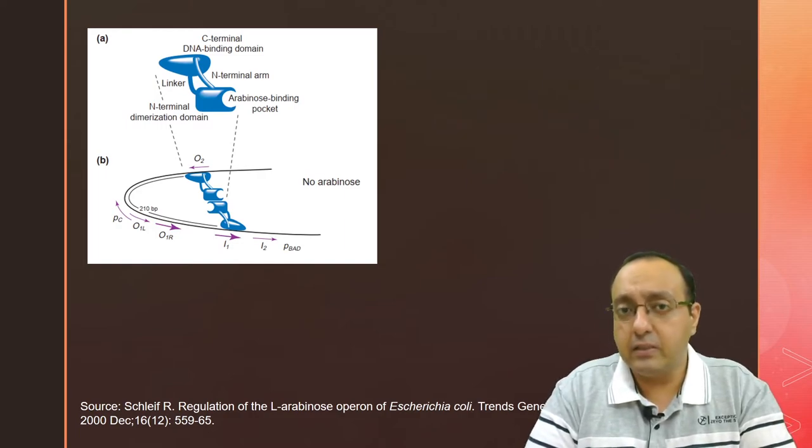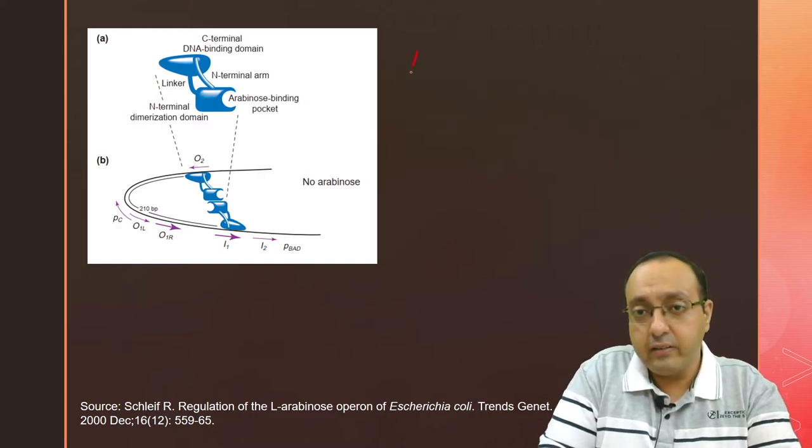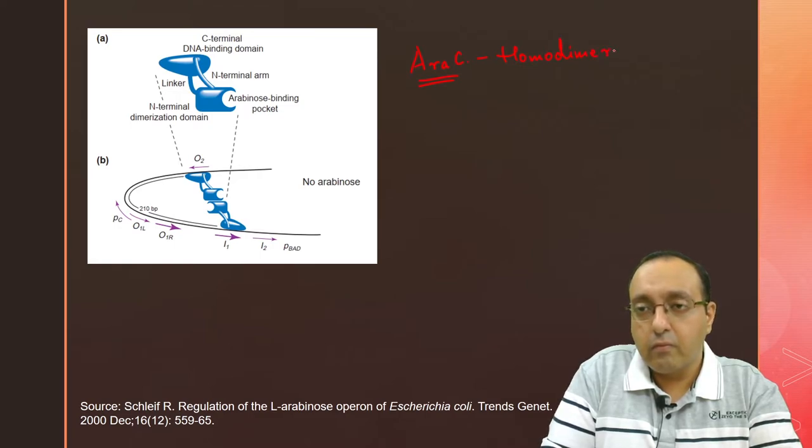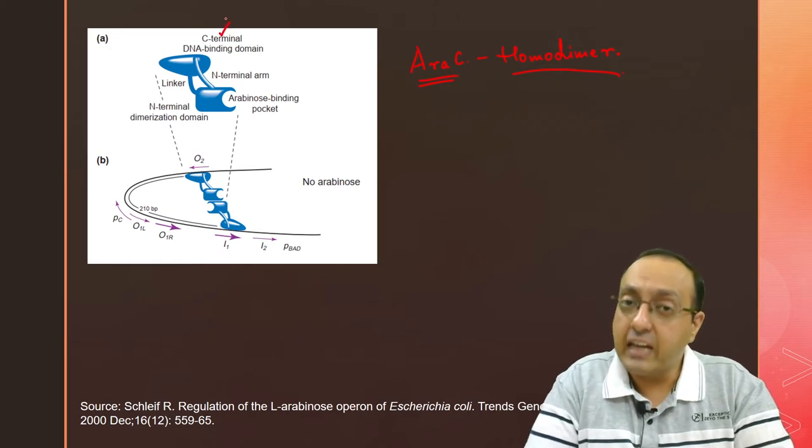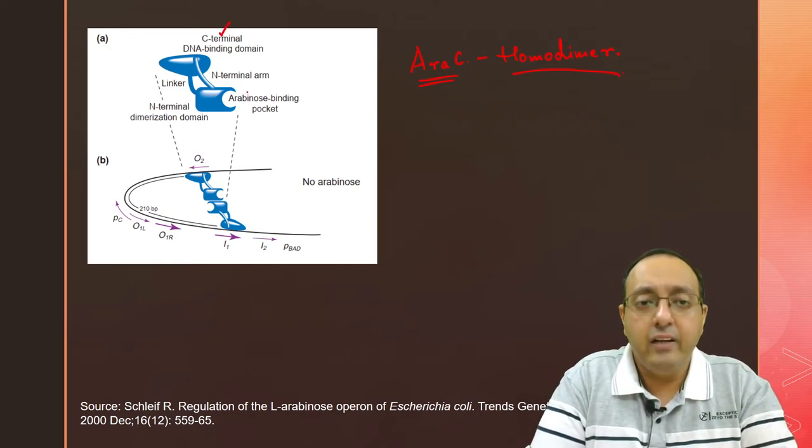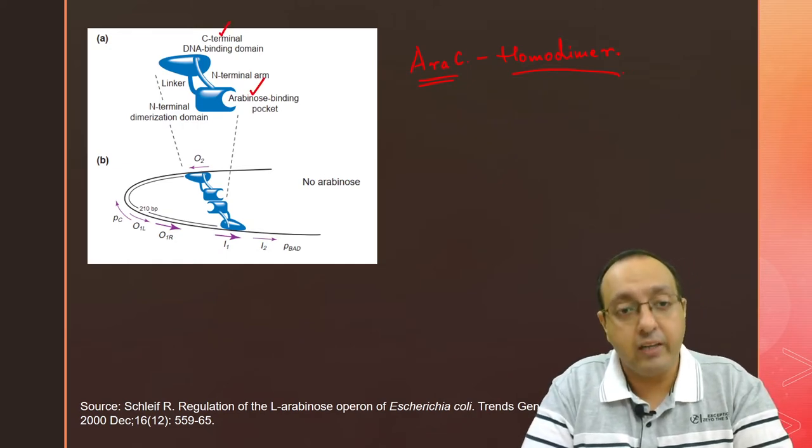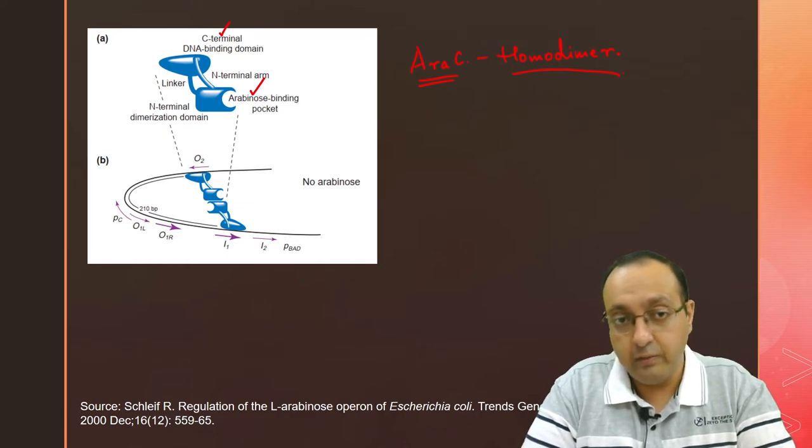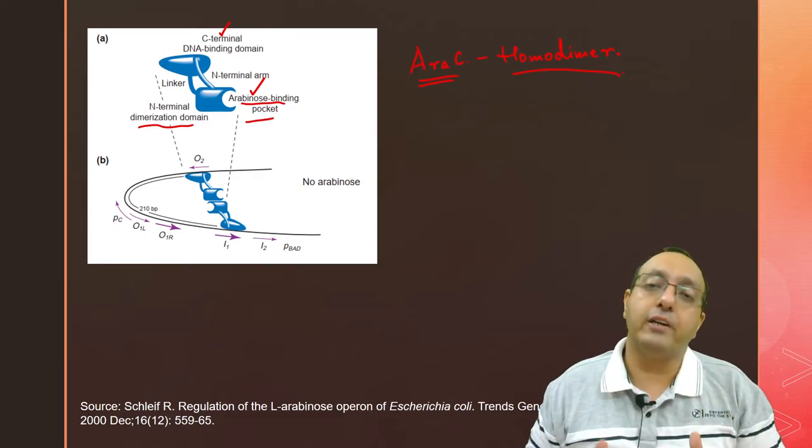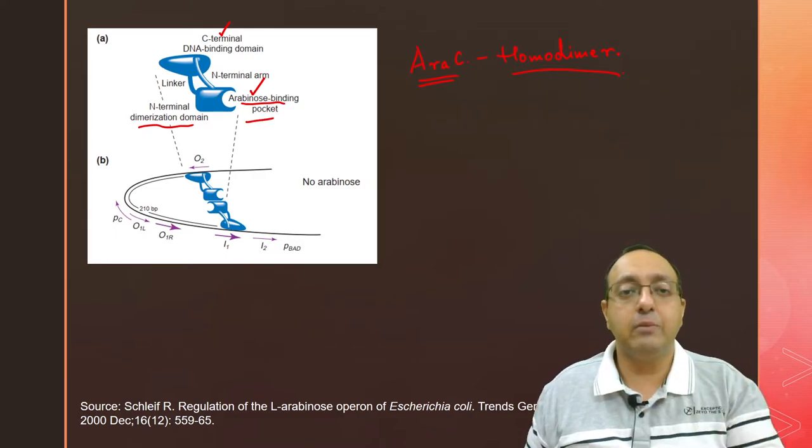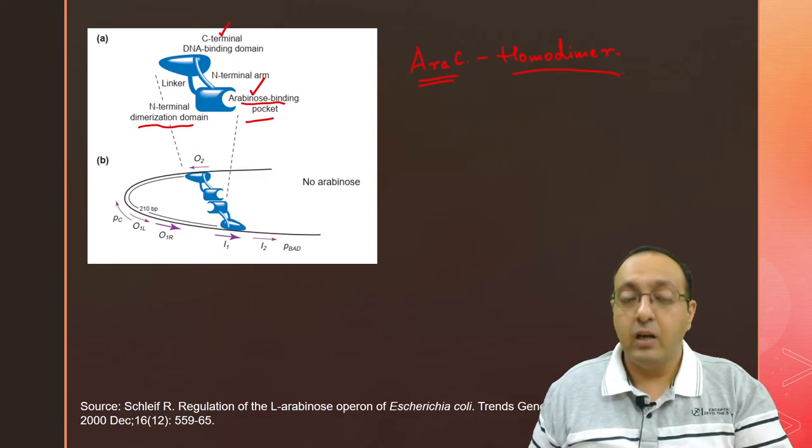AraC, which is the regulator, is a homodimer. You can see it has a C-terminal DNA binding domain and an N-terminal arabinose binding pocket as well as dimerization domain. The dimerization domain and arabinose binding pocket are both located in the N-terminus, and the C-terminus has the DNA binding domain.